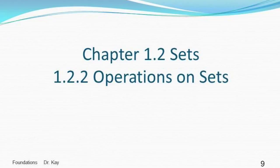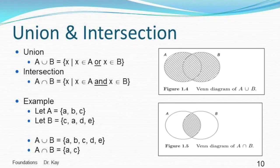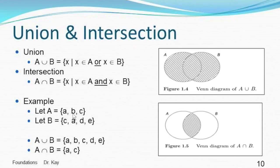Now let's talk about section 1.2.2. We've got Venn diagrams of union and intersection — you should be familiar with both. The union of two sets is the set of all elements in either set. The intersection is all elements that appear in both sets. Here's set A and set B, showing the union and intersection, and we can draw these Venn diagrams for A union B and A intersect B.